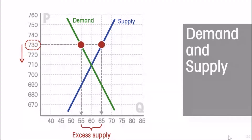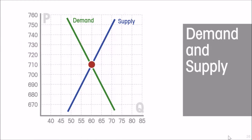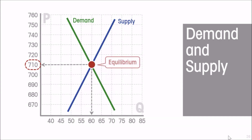So if prices are where there is excess demand, price will tend to rise. If prices are where there is excess supply, price will tend to fall. The only price at which there is no tendency for it to move either way is where the demand and supply curves cross — that is the only price where quantity demanded equals quantity supplied. In this example, that is at seven hundred and ten dollars a pound. That is called the equilibrium.